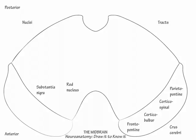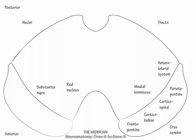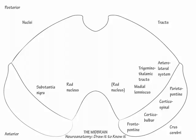Lateral to the red nuclei, draw the medial lemniscus, and posterior lateral to it draw the anterolateral system. Lower in the brainstem these sensory bundles lie more medial, but here indicate that the midline position nuclei push them out laterally. Internal to the medial lemniscus and anterolateral system, label the trigeminothalamic tracts.